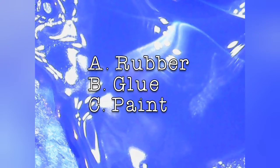Well, this certainly is shiny. Kind of looks like some type of liquid. But that looks different. I'm not for sure. Do you think it's rubber, glue, or paint?